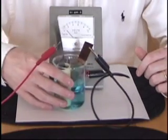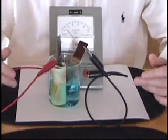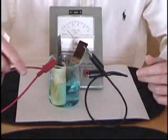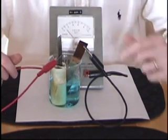you get registered on the meter a positive voltage, which means that there is a current flowing from the anode, the zinc, to the copper, which is the cathode.